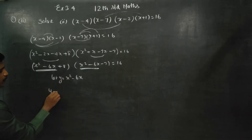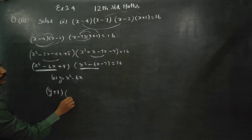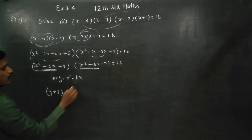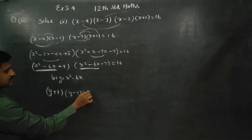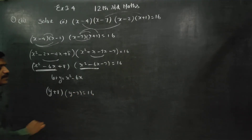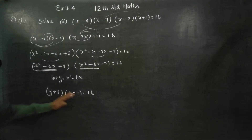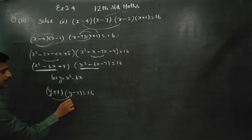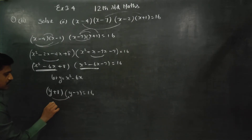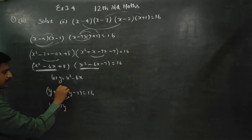y plus 8 into y minus 7 is equal to 16. Now, again, this gives y squared minus 7y.